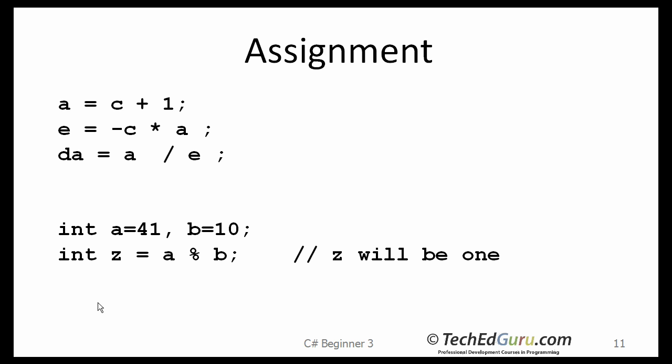This is how the assignment statements work. And again, these are pretty straightforward. On the first one, I am taking the current value of C, adding one to it, and I am assigning the result to A. On the next line, the result of this multiplication is assigned to a variable A. And here, the result of a division is assigned to a variable called DA.